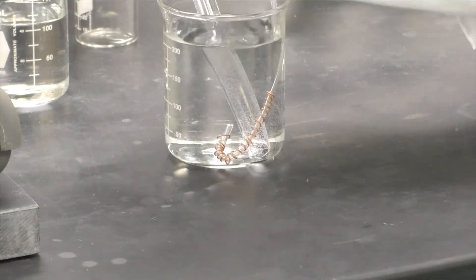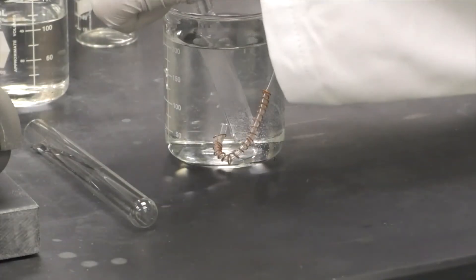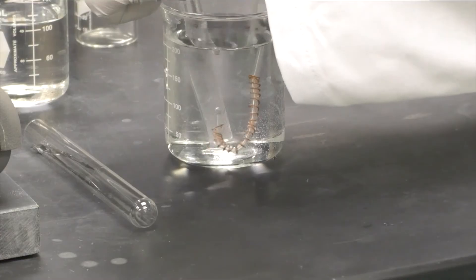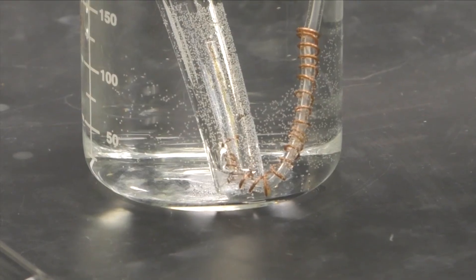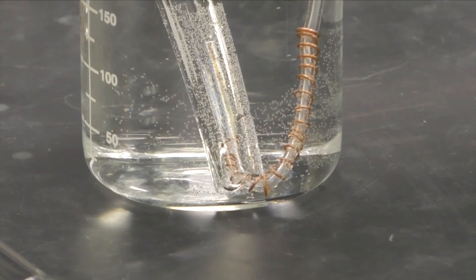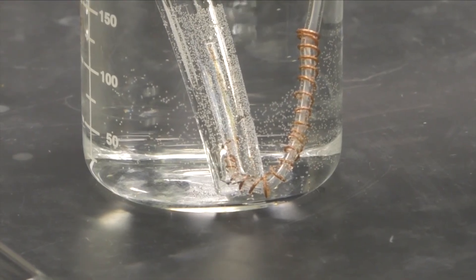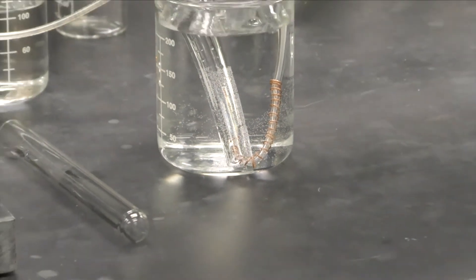Then, carefully lift the gas collection tube and slip it over the end of the Tygon tubing. Let the gas collection tube completely fill with gas until there are bubbles coming out of the glass tube.